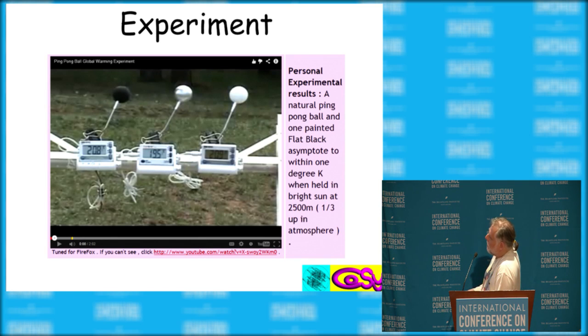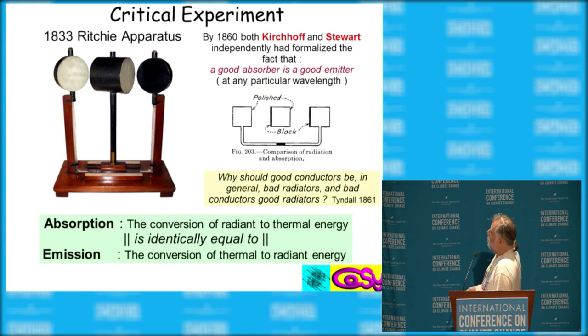But that's the total amount of difference you get with extreme difference in color. And here's a critical experiment, 1833, Ritchie. This is the sort of thing that used to be used in class. This shows that the black and white ball come to the same temperature.